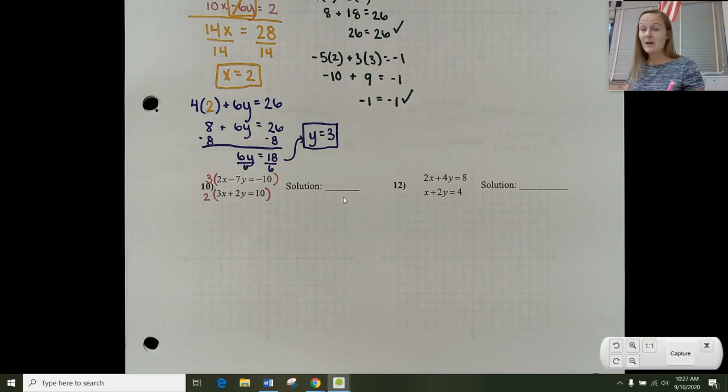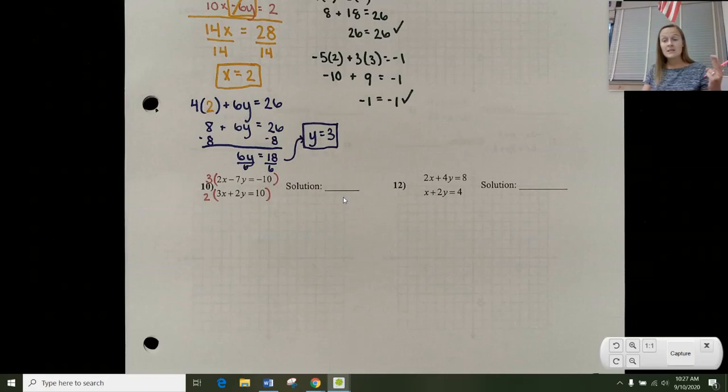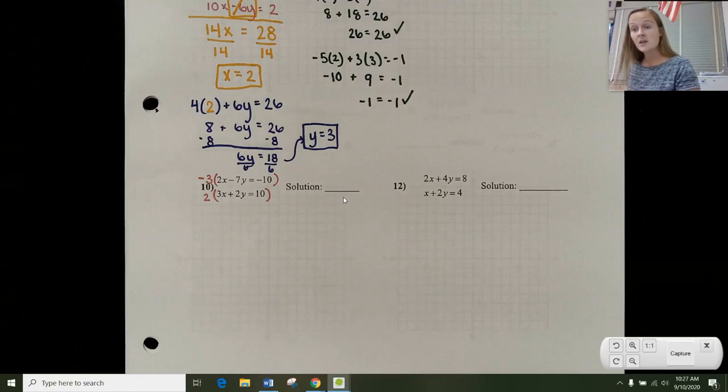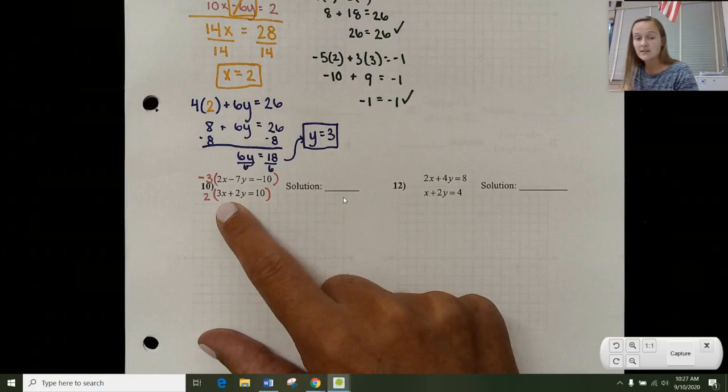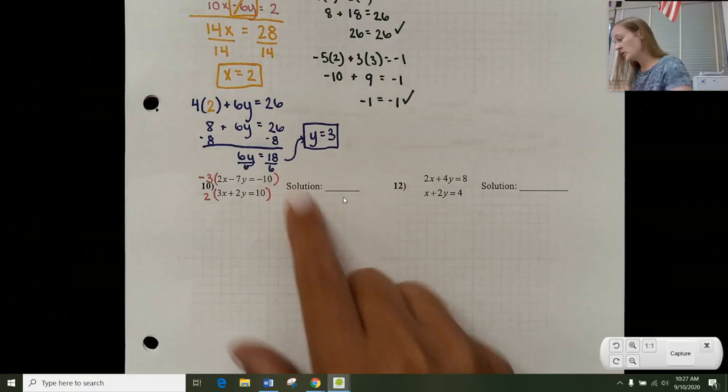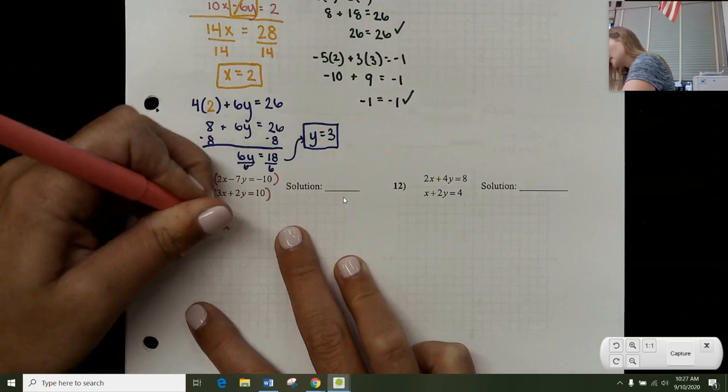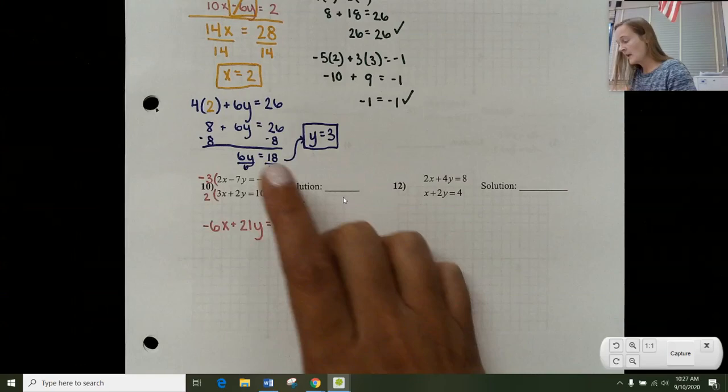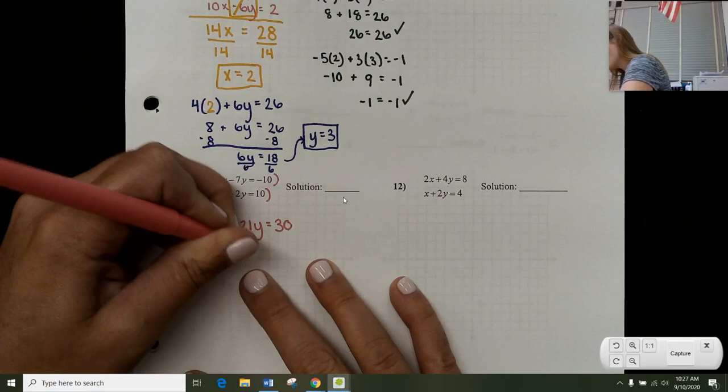That'll get them both to be equal to 6x. But remember, you need same coefficient, opposite signs. So you need to choose one of these two equations to be negative. So I'm just going to choose the top one. You could choose the bottom one. It doesn't matter. So I'm going to make the top one be multiplied by negative 3, because then I know this top one will be negative 6x and the bottom will be positive 6x. So now I would have the same coefficient, opposite signs. So I'm going to go through and do that. So I've got negative 6x plus 21y equals 30. Notice I multiplied every single piece, all three pieces by that negative 3. Bottom one is going to turn into 6x plus 4y equals 20.